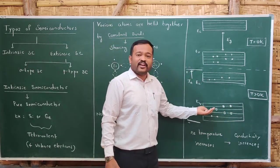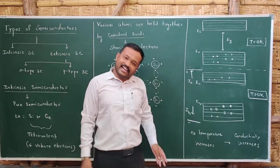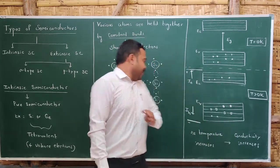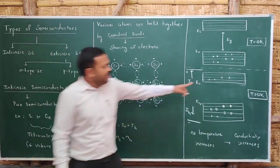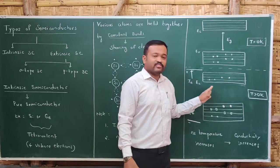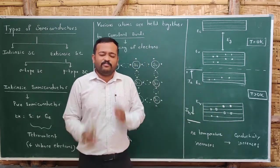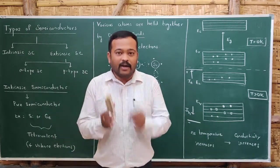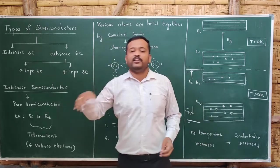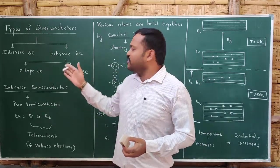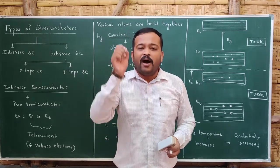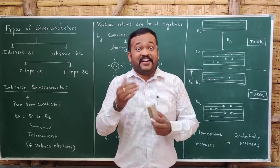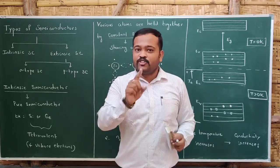As the temperature increases, more electrons jump from the valence band to the conduction band, which increases conductivity. Also note that in intrinsic semiconductors, the number of electrons equals the number of holes. However, even at room temperature there is not much conductivity, so intrinsic semiconductors do not have many practical applications. When we add something to pure semiconductors, the conductivity increases — that is what we study in extrinsic semiconductors.